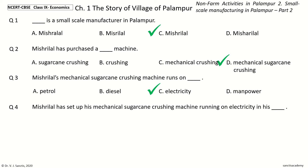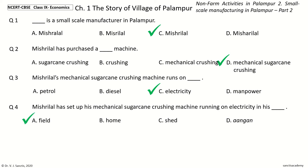Question 4: Mishrilal has set up his mechanical shurakane crushing machine running on Electricity in his dash. The options are Field, Home, Shed, Angan. And the answer is Field. So, Mishrilal has set up his mechanical shurakane crushing machine running on Electricity in his Field.